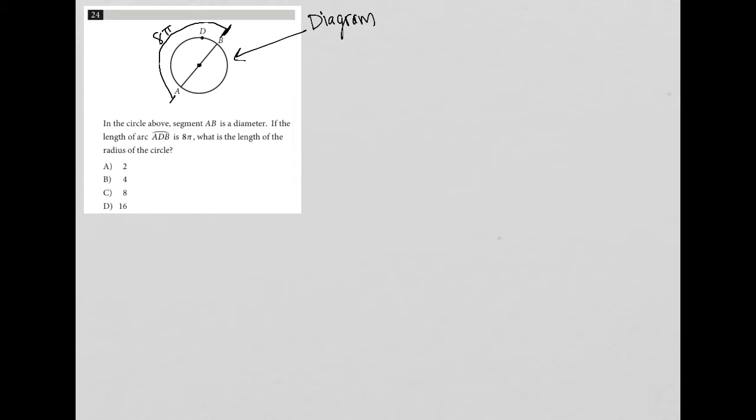All right, so what do I know? I know the length is 8π. I'm trying to find the radius here. So I know, of course, that the other side here must also be 8π.